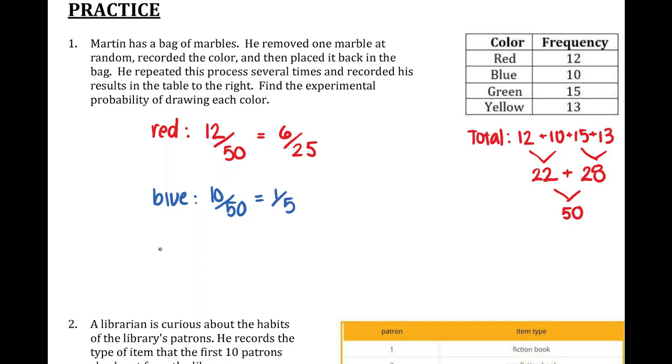Green. Green was chosen fifteen out of the fifty times, which reduces to three-tenths.